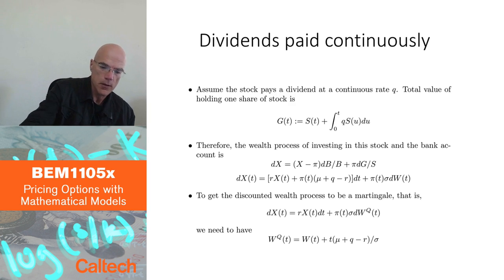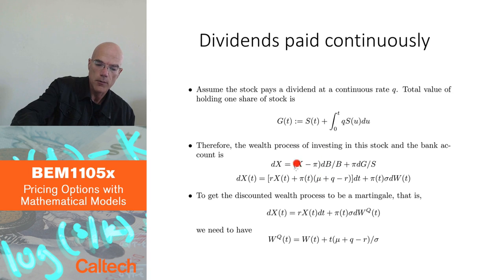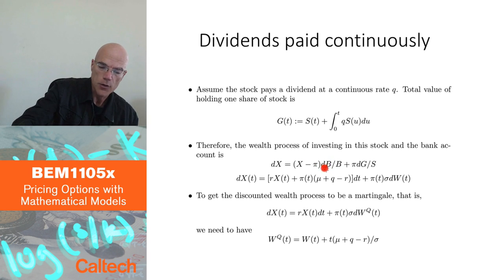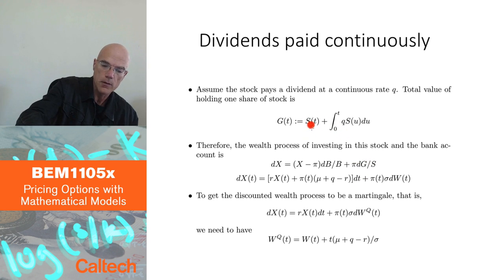The dynamics of the wealth process: the change in wealth dX is the bank account term — (X minus Pi) over B times dB — plus Pi over S times dG, because our gains and losses come both from the stock price and from the dividends. So it's dG now, not dS as before. DG is equal to dS plus Q·S·dT, since differentiation kills the integral. That's what dG is: dS plus Q·S·dT.